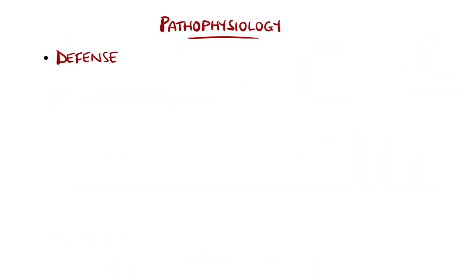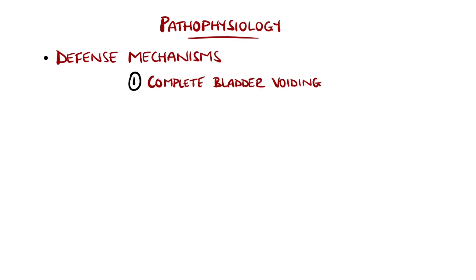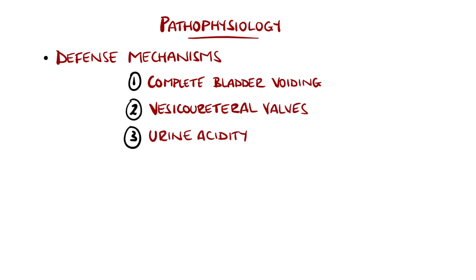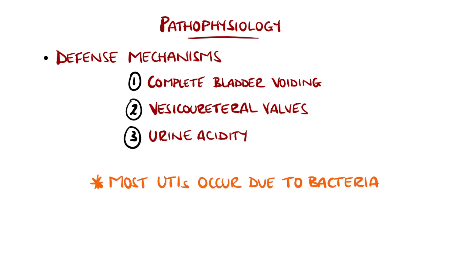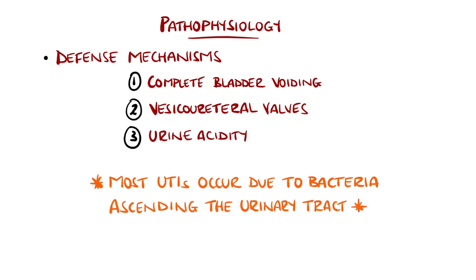Normally, the urinary tract remains a sterile location, with defense mechanisms including complete voiding of the bladder, presence of the vesico-ureteral valves, and urine acidity. UTIs arise when these mechanisms are overcome, most commonly by pathogens ascending the tract.